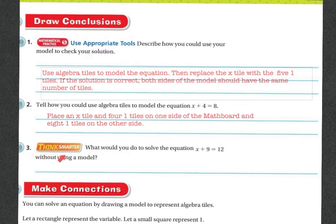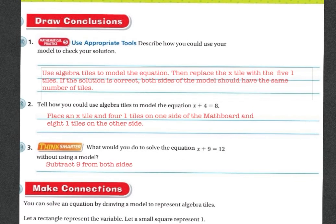Number 3 — think smarter. What would you do to solve X plus 9 equals 12 without using a model? The goal is to get X alone. Since it's plus 9 on this side, I'd subtract 9 from this side. And if I subtract 9 from one side, I have to subtract 9 from the other side. So subtract 9 from both sides — that's how you would do it without a model.